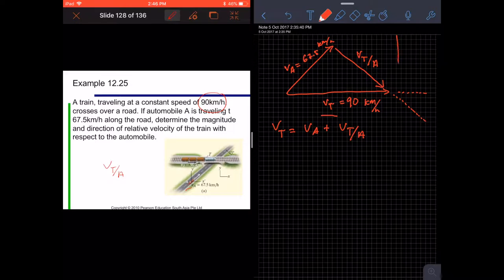If we write this as I direction and J direction, we are going to get VT equals 90I. 90I equals VA which is 67.5. Please take note that this is 45 degrees. X component is 67.5 cos 45 I plus 67.5 sin 45 J.